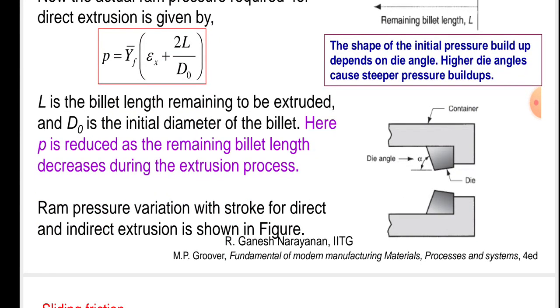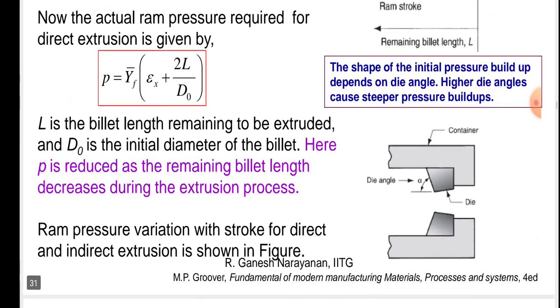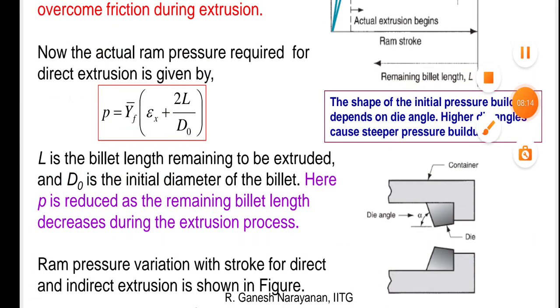We will see in the figure: container, the die angle alpha, the two dies upper die and lower die. Ram pressure variation with stroke for direct and indirect extrusion is shown in figure below. This is the extrusion process. Thank you.